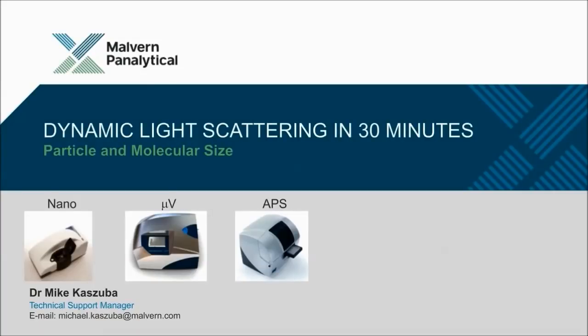Thanks Craig. Welcome everybody. This talk is called Dynamic Light Scattering in 30 Minutes. It's designed to be a quick, short discussion of the technique, how the technique works, and so on. Those of you that use Malvern Panalytical products will know that the Zetasizer series consists of three instruments. So this talk today is really applicable to all three. We've got the Nano, the Micro-V, and the APS. So the basics of the technique are the same for all of these instruments.